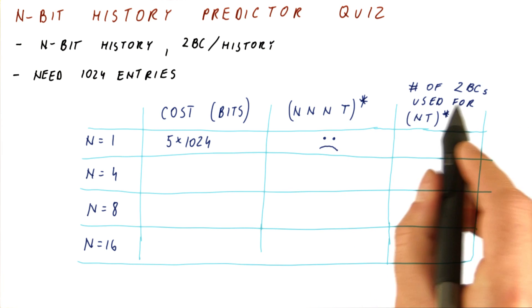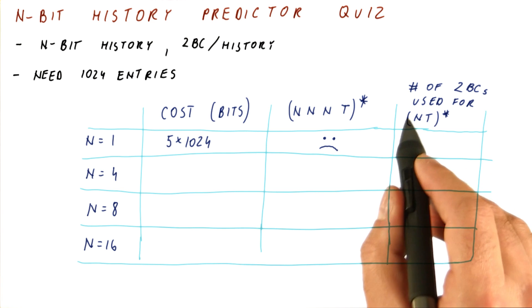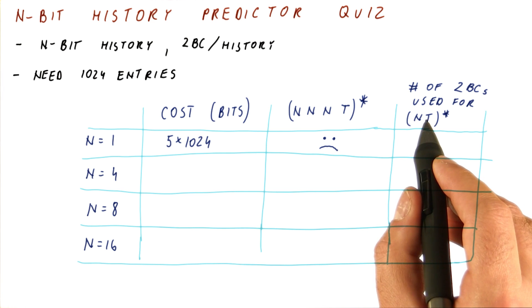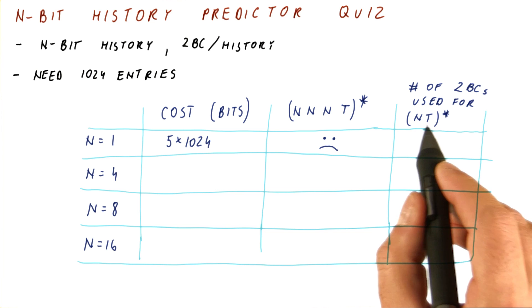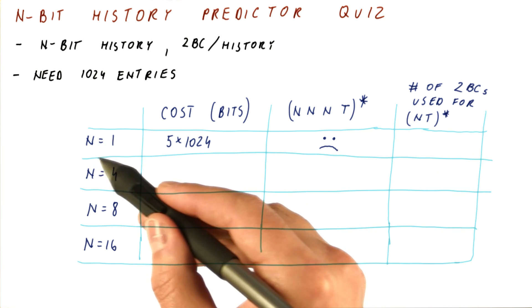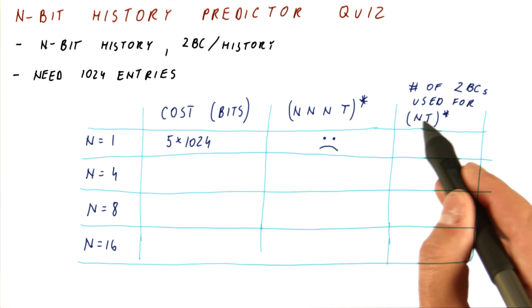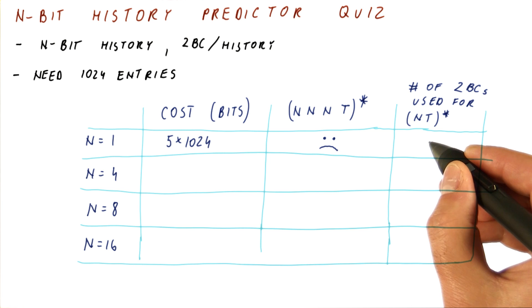Finally, what is the number of two-bit counters in an entry that we actually use when trying to predict the repeating n, t pattern—meaning not taken, taken, not taken, taken, and so on? We already know that in the n equals one predictor, we need to use both of our counters, so the answer is two.